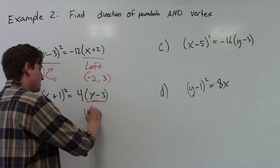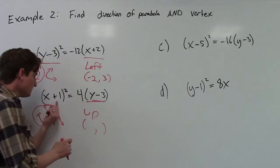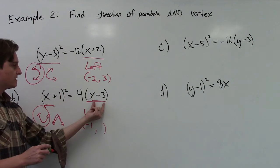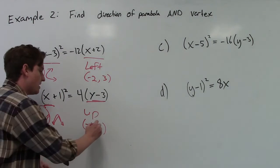Then we want to find the vertex as well. So the number inside with x is a plus 1. We're going to put a minus 1 here. The number inside here with y is a negative 3. We're going to put a positive 3 here.